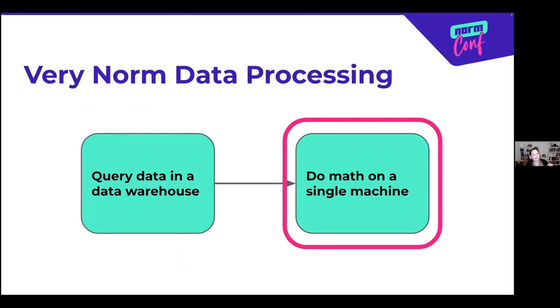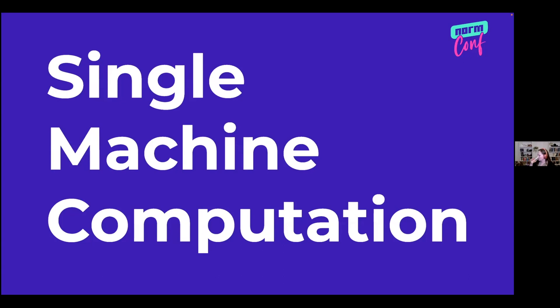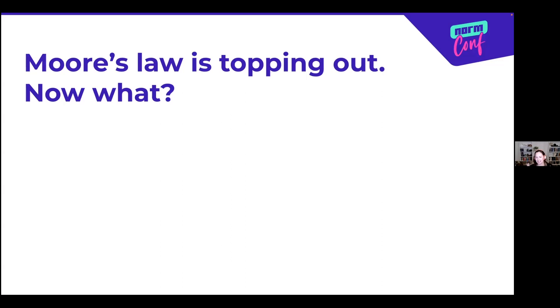Second section: we're going to do math on a single machine. We have some concept of how we spread data around in a data warehouse and process it. Now we're going to do something smart with mathematics. Probably the thing that comes up most when thinking about single-machine computation is Moore's Law — the density of transistors just keeps increasing. But Moore's Law is topping out; we're kind of getting to the end of it.